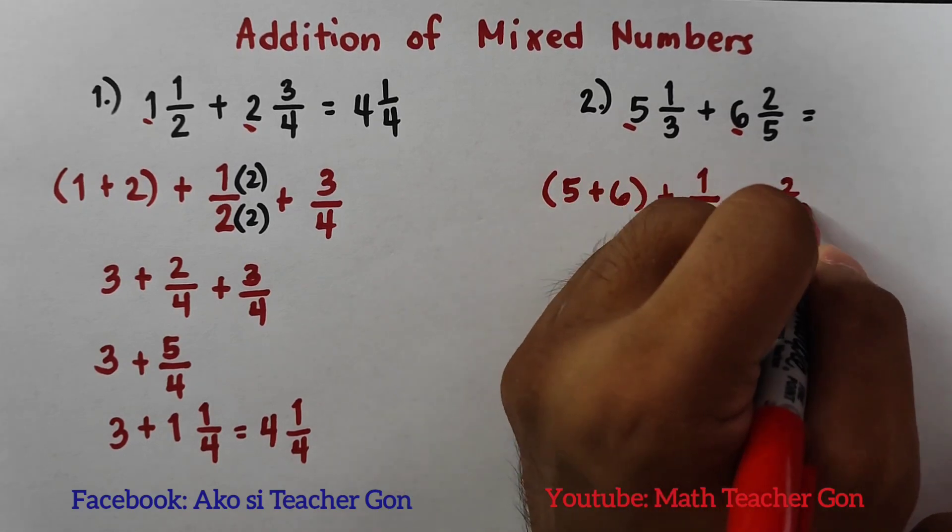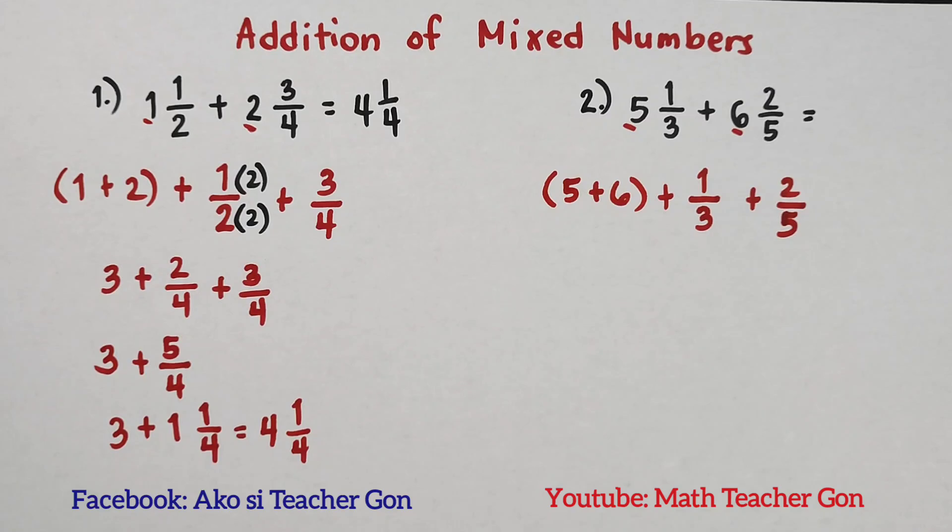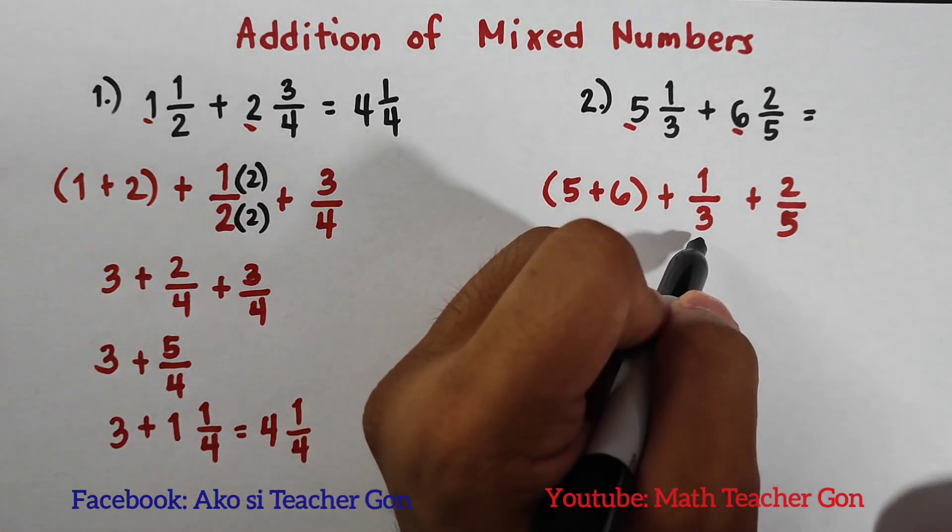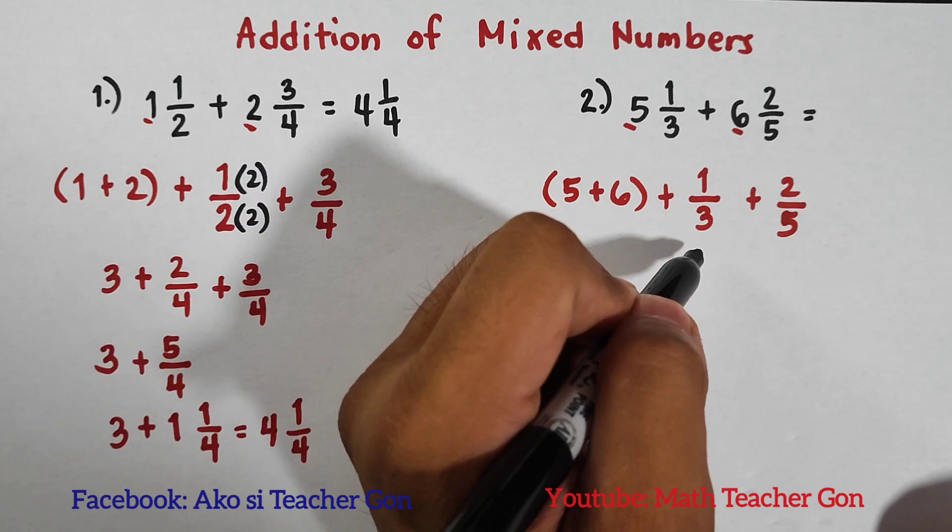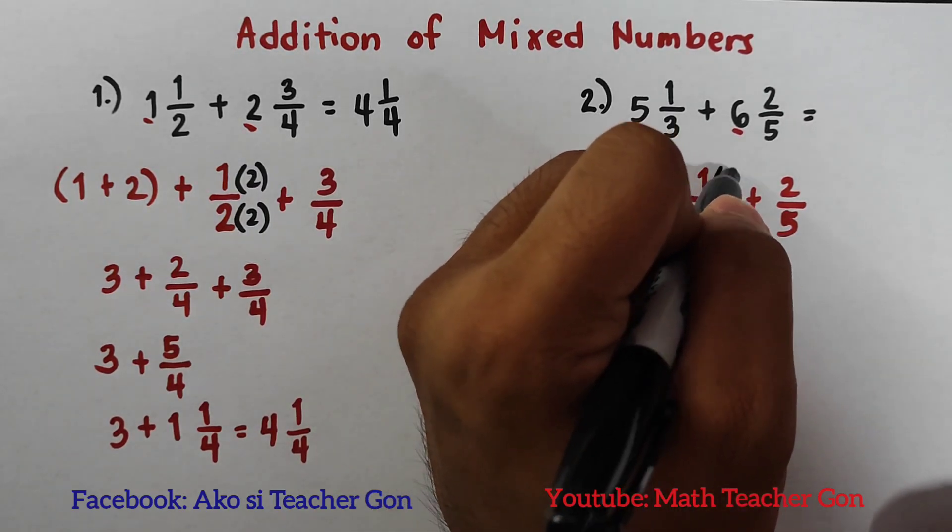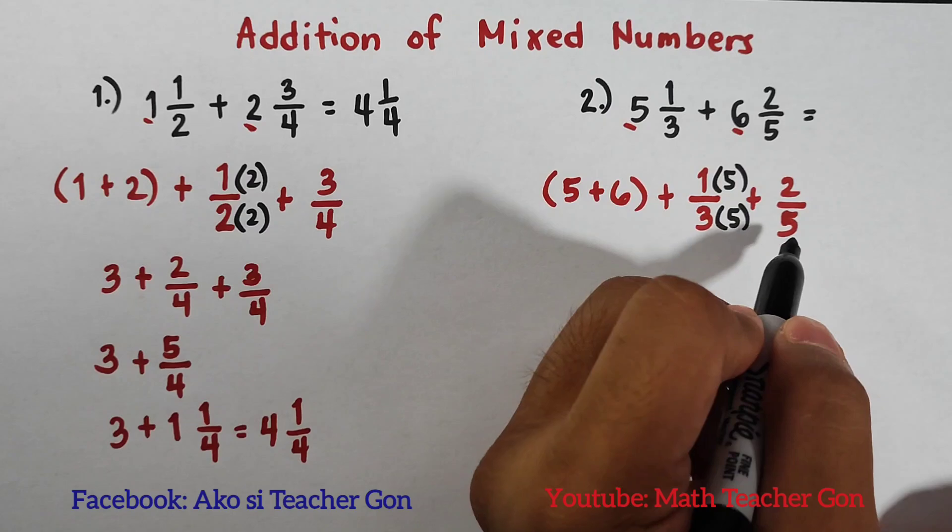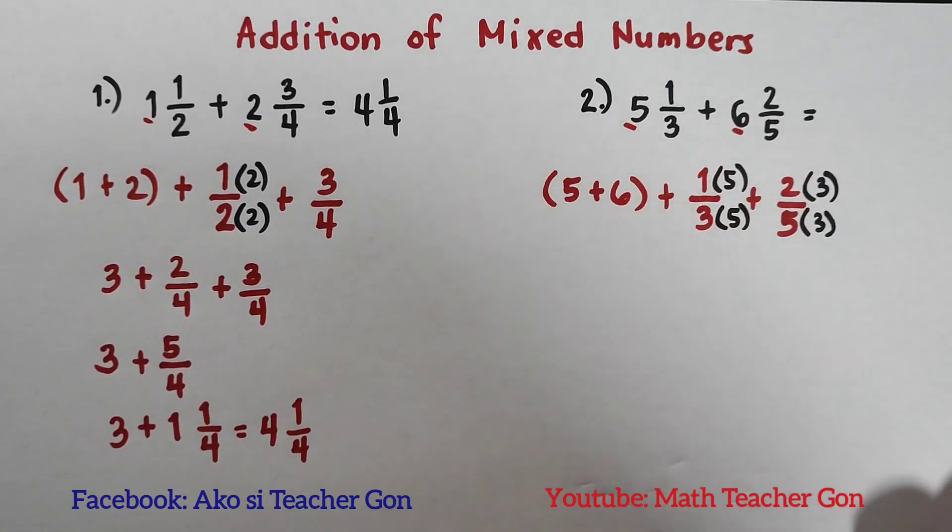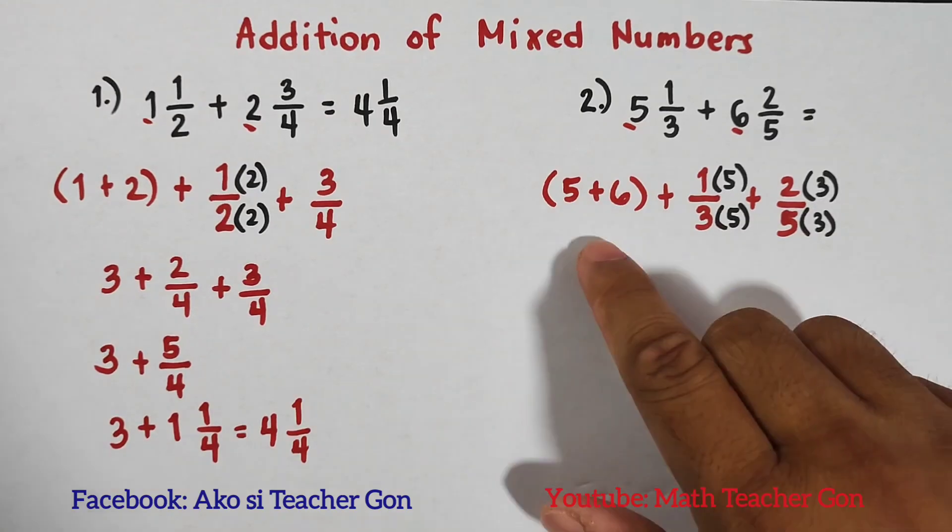Plus ⅖. And as you can see, we have different denominators, which is 5 and 3. And definitely their LCD, or least common denominator, is 15. So what we need to multiply by 3 to make it 15 is 5, and also this by 5. And for 5 to make 15, we will multiply by 3, and also by 3.